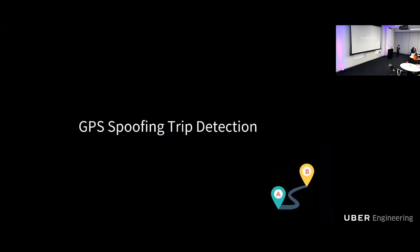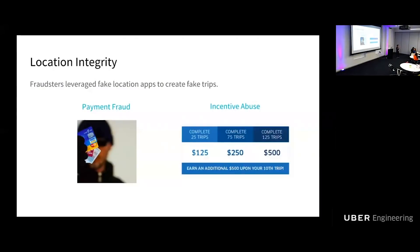I will start with GPS spoofing trip detection. In Uber, everything is about location integrity. The fraudsters can leverage fake location apps to create fake trips. Like in Pokemon Go where you can use a spoofing app to spoof your location to catch monsters, people do the same thing to Uber. For payment fraud, they create a rider account with a stolen credit card, use the spoofing app to create fake trips on a driver account, then use the rider account to pay — cashing out the credit card. Fraudsters also use spoofing apps to create fake trips to boost trip counts and meet incentive requirements.